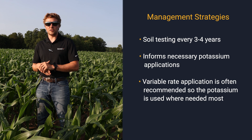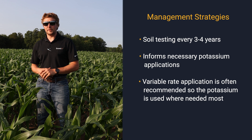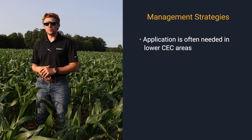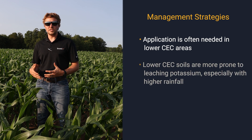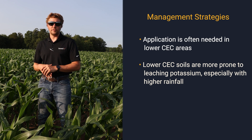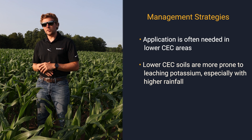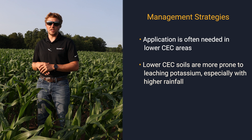Once we determine that a potassium application is necessary, we want to make sure we're doing it in the right way. With low CEC soils, the closer we can apply that potassium to planting — in line with the crop's actual needs — the better off we're going to be. This is often because low CEC soils can actually leach potassium if we get a lot of rain, due to the low cation exchange capacity, so potassium gets knocked off that soil colloid before a lot of other cations that have a much higher exchange capacity.